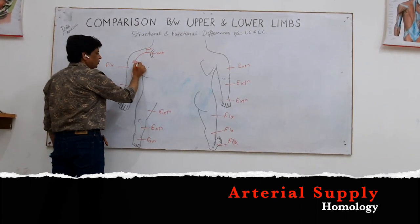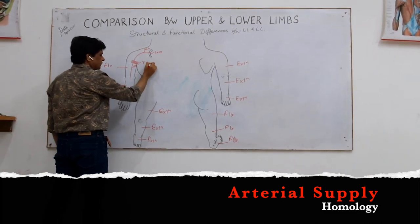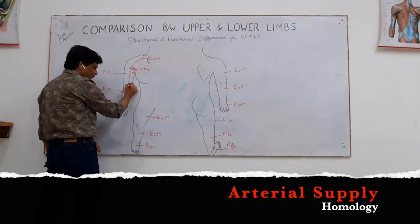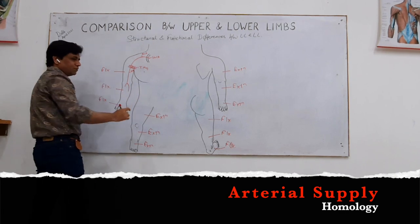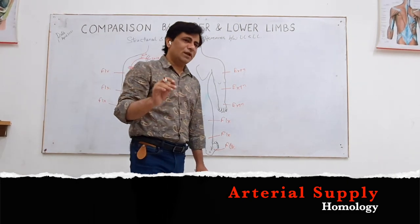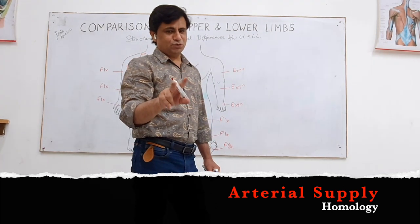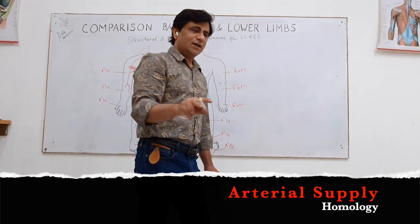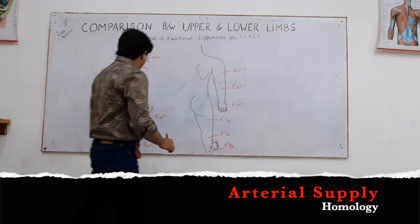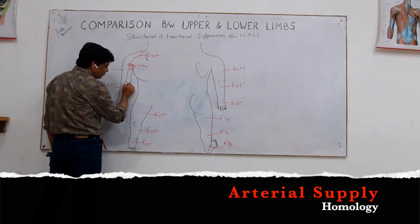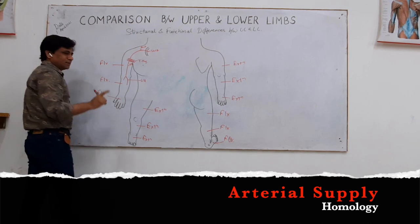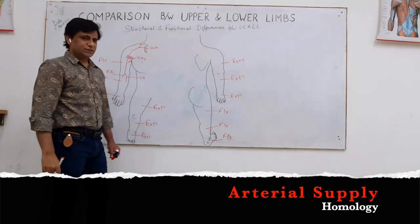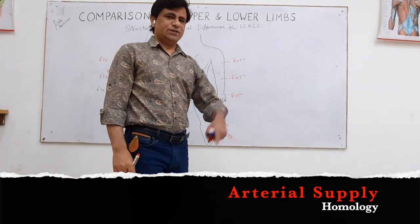The brachial artery divides into two terminal branches: one major and one minor. Remember, whenever an artery terminally divides into two branches, they are not of equal caliber. The ulnar artery is the major continuation of the brachial artery, while the radial artery is the minor branch — it is more superficial. The ulnar artery is the deeper artery.